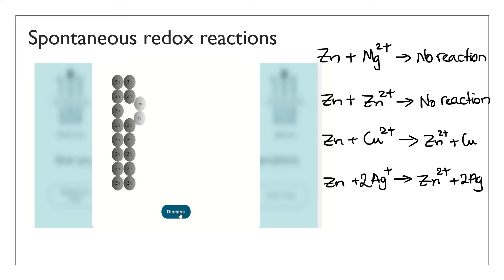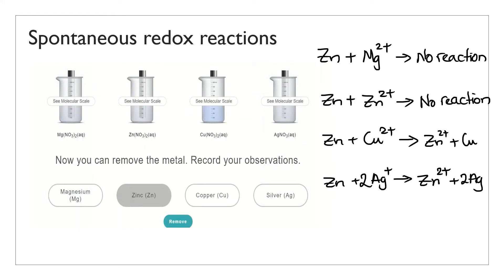Last combination: there's a redox reaction there as well — a transfer of electrons. The piece of zinc donates electrons to two silver ions, producing zinc ions and solid silver, and the zinc ions also leave the surface of the material. So this simulation highlights the fact that zinc reacts spontaneously with copper ions and with silver ions, but does not react with magnesium ions or zinc ions.